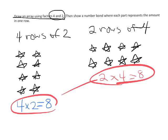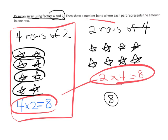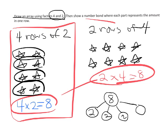The last part says: draw a number bond that represents the amount in one row. Using this array as our example — we have four rows of two — our number bond starts with eight and shows the four groups of two. That's what our number bond would look like.